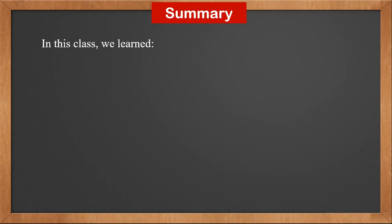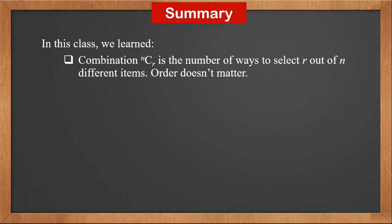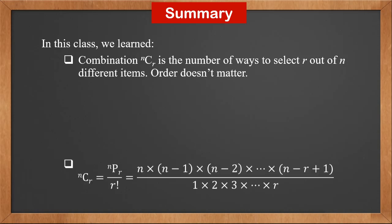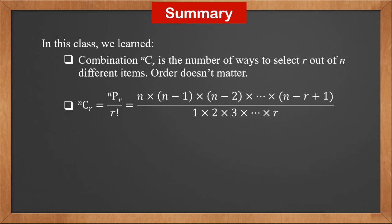In this class, we learned: combination nCr is the number of ways to select r out of n different items. Order doesn't matter. nCr is nPr over r factorial.